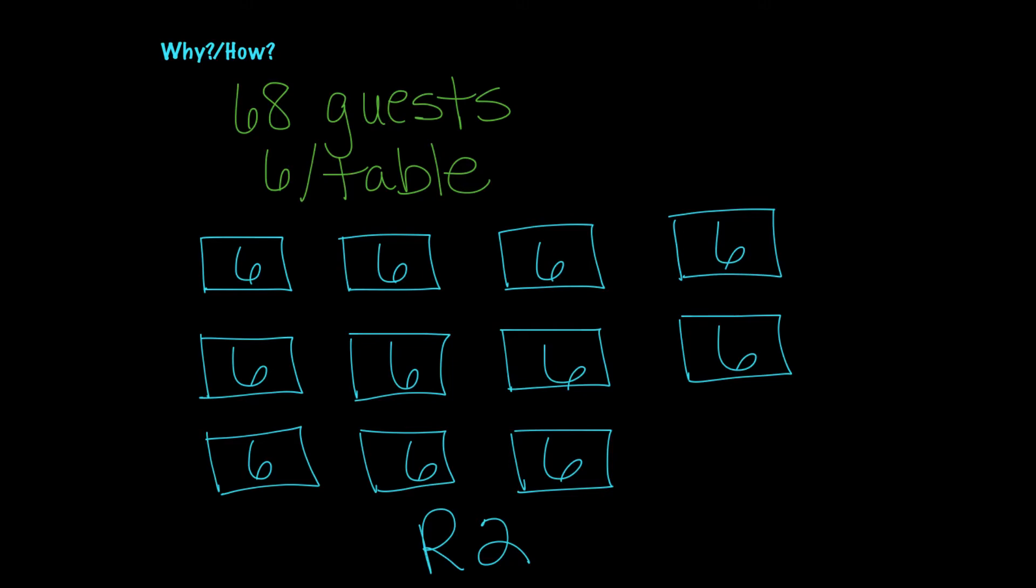So that means I have a remainder of two. So what do I do with this remainder in this situation? That means I have two guests that don't have any place to sit. What would we do? That would mean that we would have to add another table for those two people to sit.